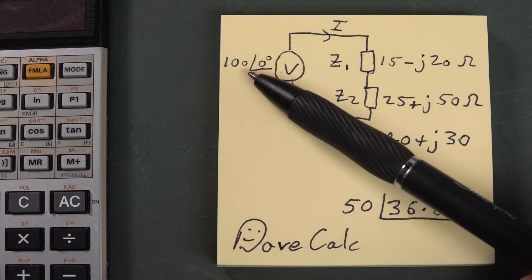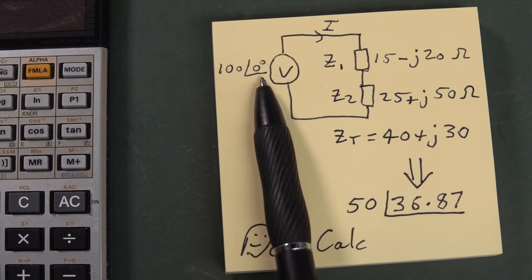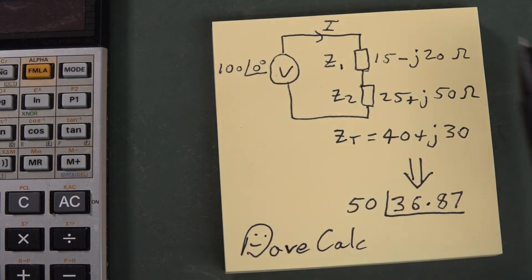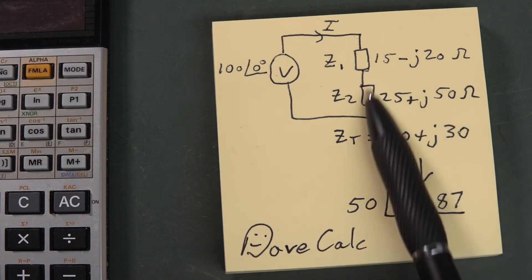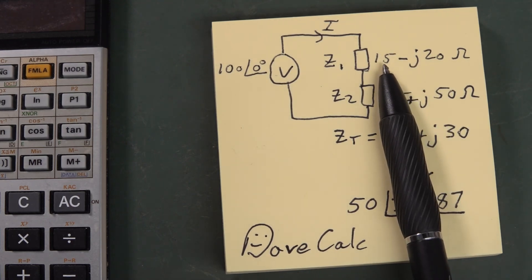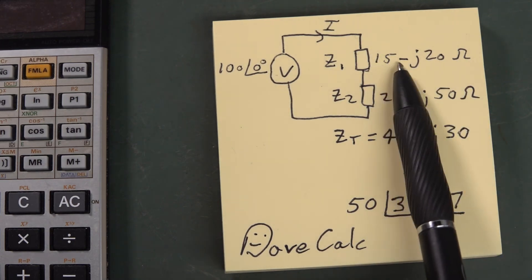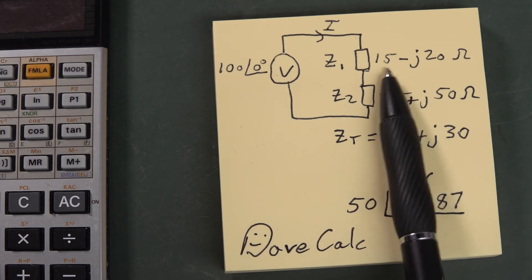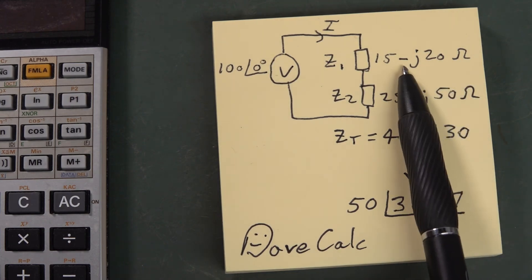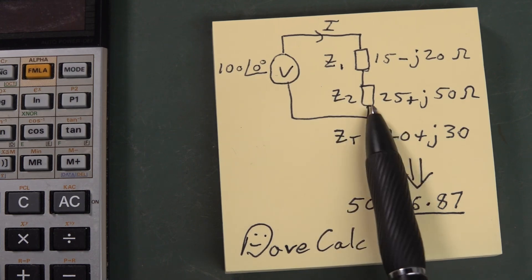For example, we've got our voltage here in polar notation. We've got the real component here at 100 volts and we've got the complex or angular part called theta at zero degrees. The impedances Z here — these aren't resistors, they're complex impedances — made up of a real component and an imaginary component, but this is in rectangular form. So we've got the real component, 15 ohms, and an angular or imaginary component of minus J20. The minus indicates this is capacitive and the positive here indicates that this impedance is more inductive.